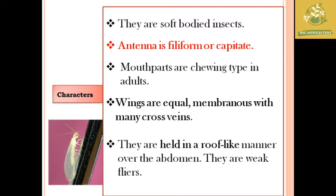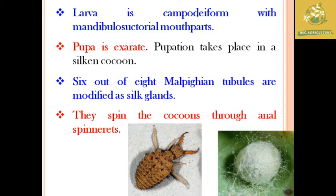These are weak fliers. Larval characteristics include out of 8 Malpighian tubules, which are modified into silk glands. The modified silk glands spin silk from the body — the Malpighian tubules will spin the body using silk.